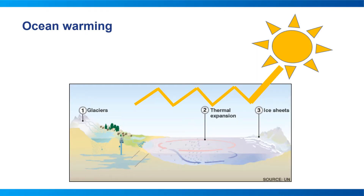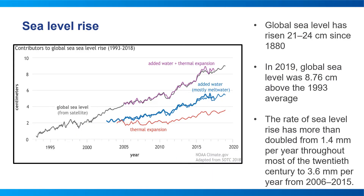Global warming doesn't just impact ocean temperatures. As heat is absorbed, ocean temperatures rise and water expands. This thermal expansion contributes to an increase in global sea level, as warm seawater has a greater volume than cold seawater. Additionally, global warming causes ice to melt more quickly and flow more rapidly to the sea, especially in low-elevation regions near the edges of ice sheets. The sea level has risen 21 to 24 centimeters since the 1880s, with the rate of sea level rise doubling every year throughout most of the 20th century.